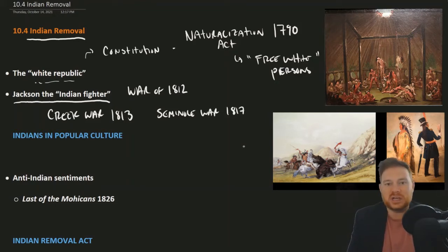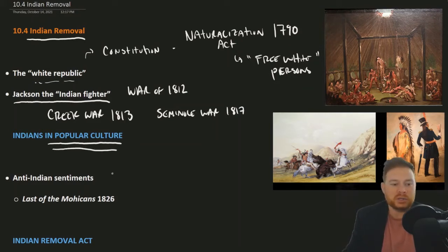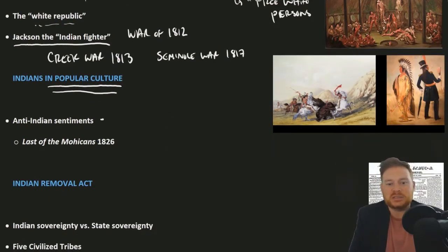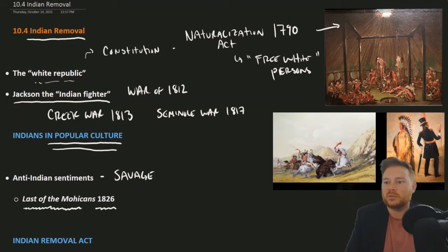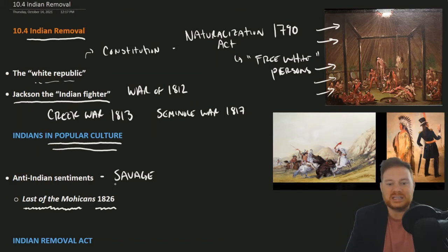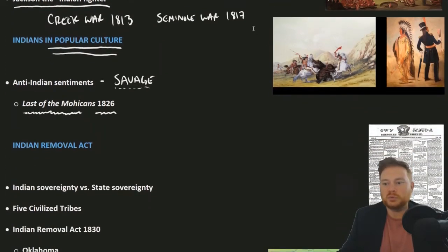Add to that the portrayal of Indians in American popular culture at the time, which was very rich in anti-Indian sentiments — the depiction that Indians are savages who serve as an obstacle to white settlement of the West. This was true in books like The Last of the Mohicans, written in 1826, but also in artwork, which similarly portrayed Native Americans as savages and framed the need to remove them as justified.